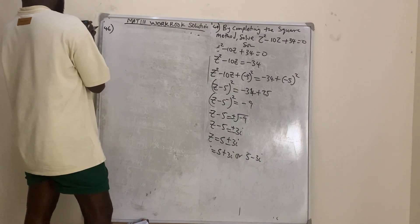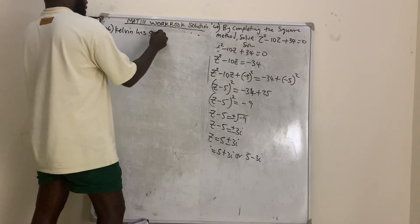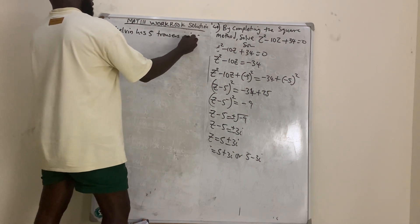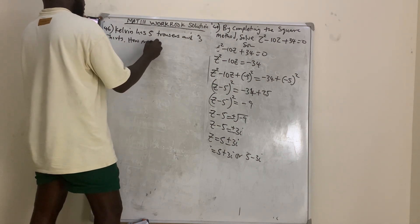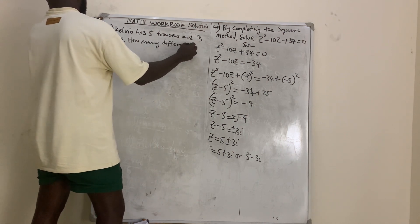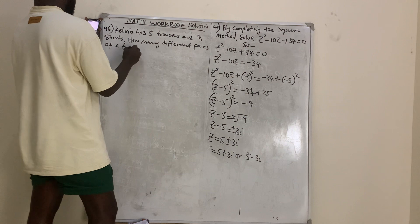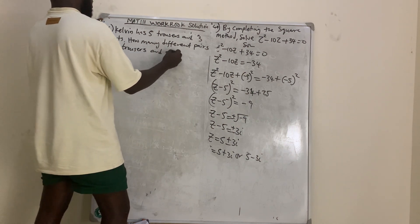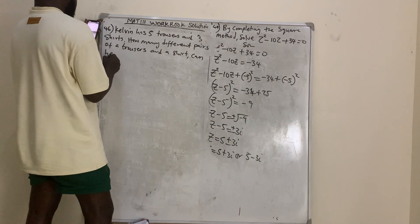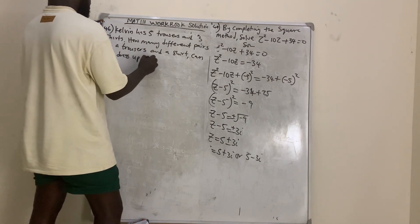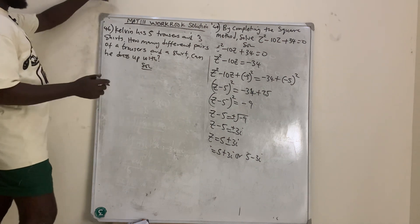Question number 47: Kelvin has five trousers and three shirts. How many different pairs of a trouser and a shirt can he dress up with? The answer is simply 3 times 5 equals 15. Let us verify this.